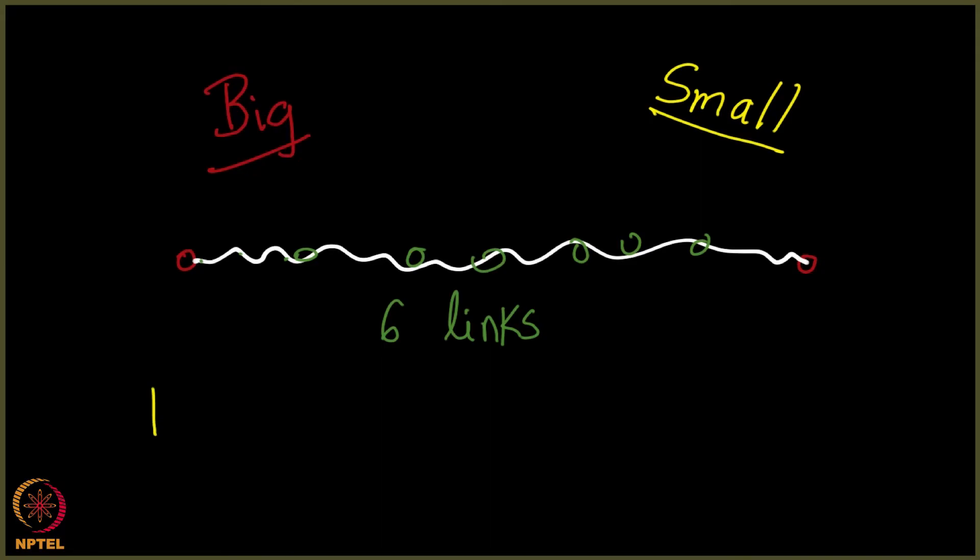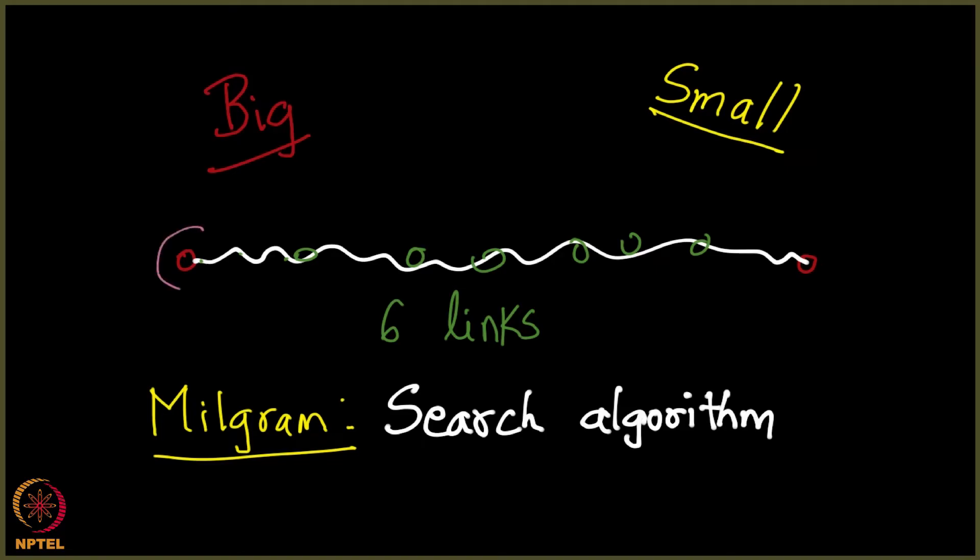In the Milgram experiment, if you observed, it is actually a search algorithm. Why so? Do you see that a person is holding a letter here and does not know who is here, and he is supposed to find a path on the friendship graph of the world. There are so many people over here, he needs to find how to reach this person here. It is indeed a search algorithm.